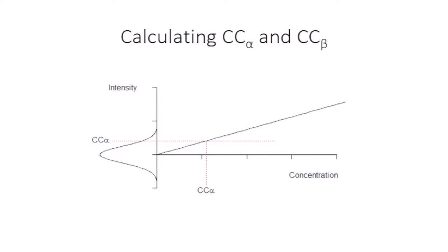Now we can imagine that at each concentration there is this kind of distribution of intensity results. So here we can see this standard deviation at each concentration represented by the blue lines.